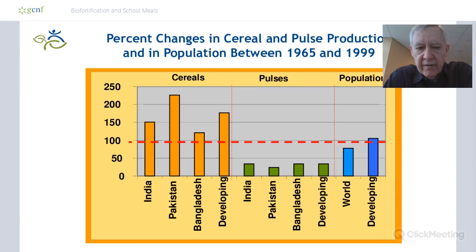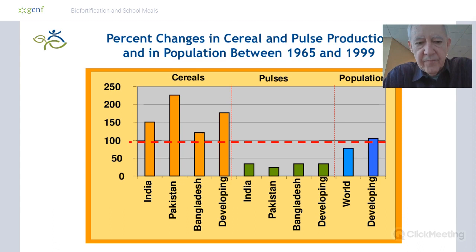Back in the early 60s, they were worried about widespread famine. Would there be enough food staples for people to keep from going hungry? So the centers for agricultural research — the system I worked for — developed high-yielding varieties of rice and wheat and maize.